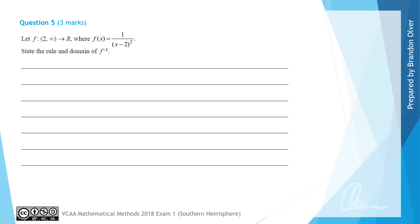For question 5 we have let the function f have a domain of 2 to infinity where f(x) is equal to 1 divided by (x - 2) all squared. We are asked to state the rule and the domain of the inverse function.